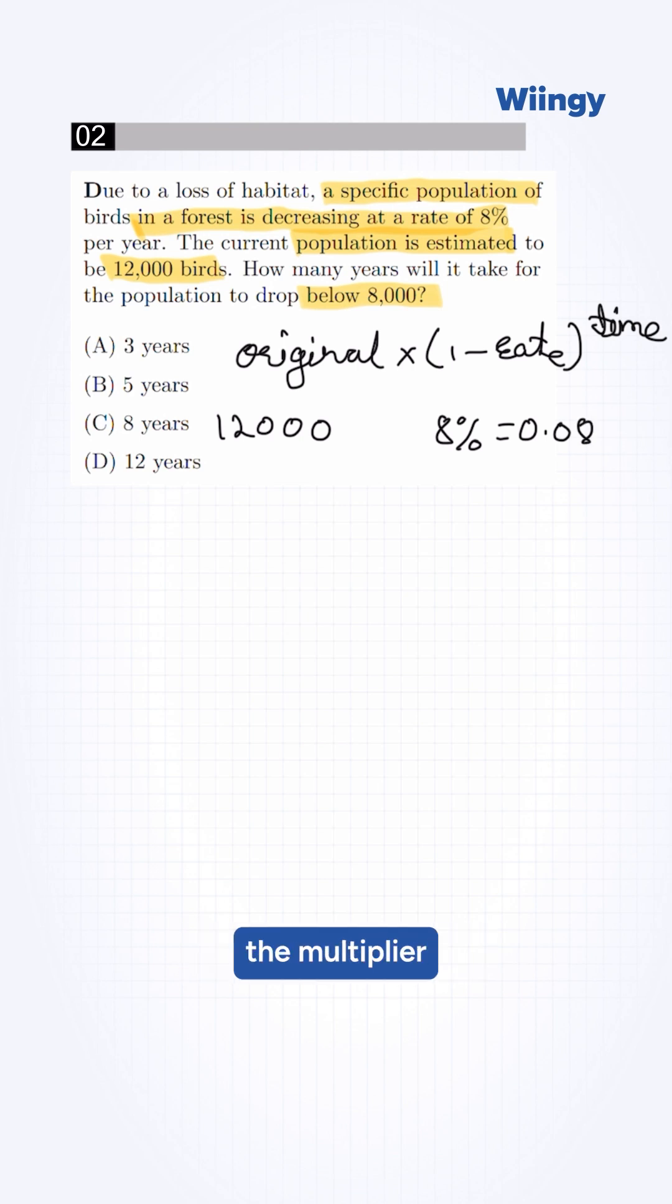We need to calculate the multiplier. 1 minus 0.08 will be 0.92. Now we set up the inequality. We want the values to be less than 8,000. Our equation is 12,000 times 0.92 raised to the power of t.